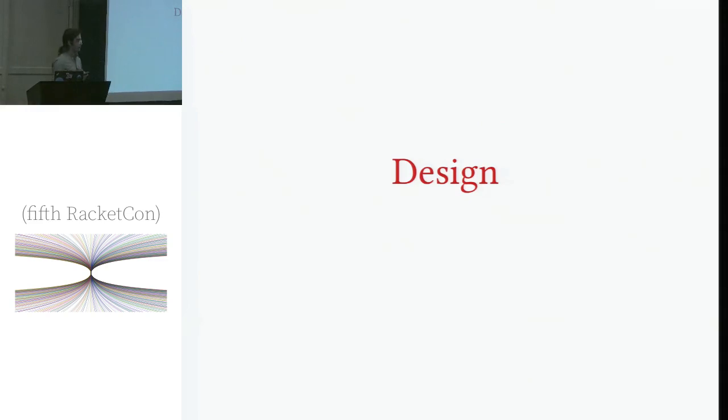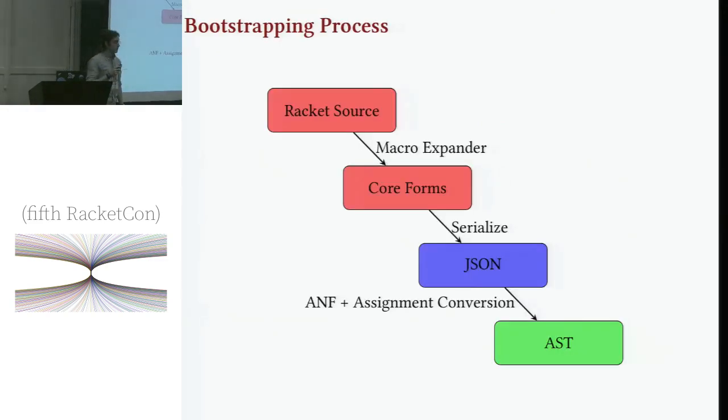So a little bit about the high level design first. So we didn't want to go through the trouble of implementing things like rackets macro expander ourselves, because we hear that's not particularly fun. So instead, what we do is we bootstrap a functioning program making use of the existing racket macro expander. So when we want to run a program, we first fire up a racket, a separate racket process, which runs a little script. That invokes rackets macro expander and gets us down to rackets core forms, which is a relatively minimal AST representation of our program. From there, we serialize that out to disk via JSON format and read that in on the picket side doing some relatively minor cosmetic modifications to make our life easier. And that AST is what the interpreter operates on.